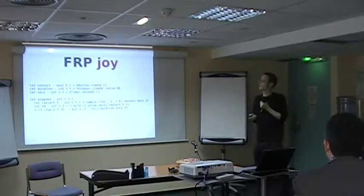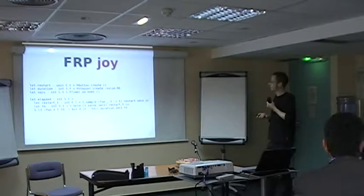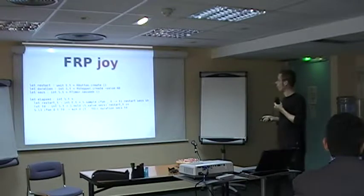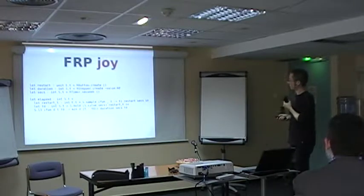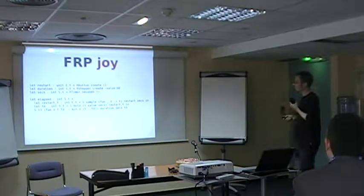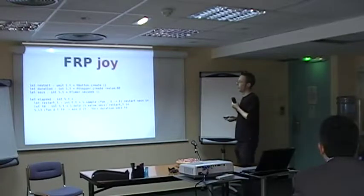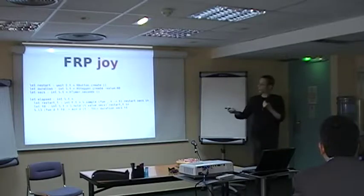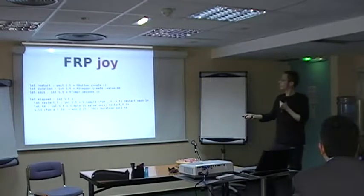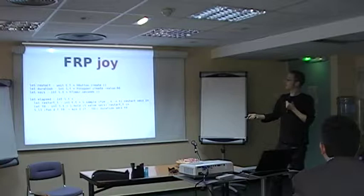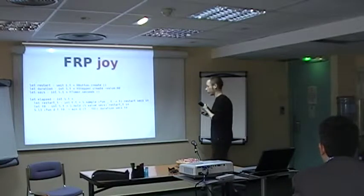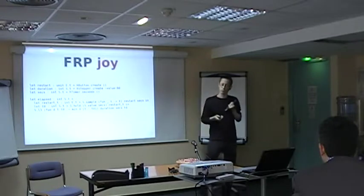So now we can express this elapsed variable as follows. So the first thing we need to derive is the last time the button was clicked. So to do that, we use this sample combinator here, which whenever the restart event occurs, which means the button is clicked, samples the second signal. And this gives us an event which holds the last time the button was clicked. And since we want to remember that, we use the hold combinator, which gives us this T0 variable here, which is a signal which holds the last time the button was clicked.